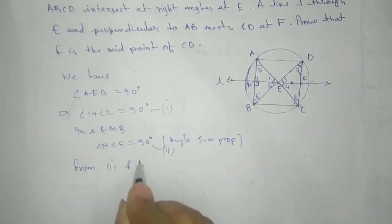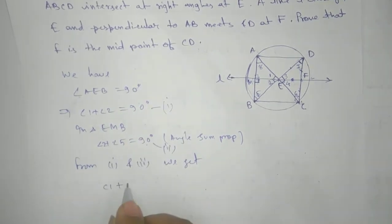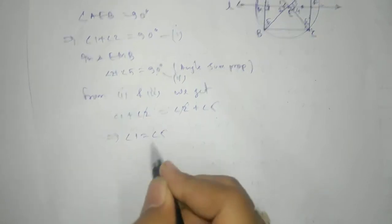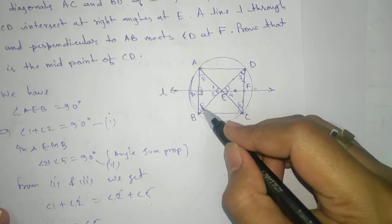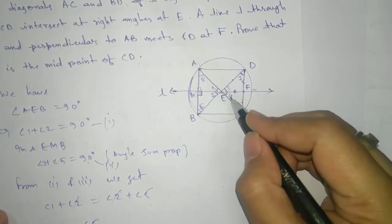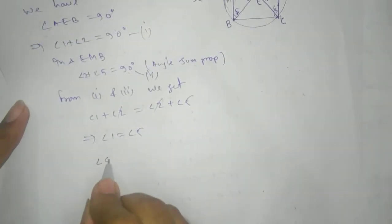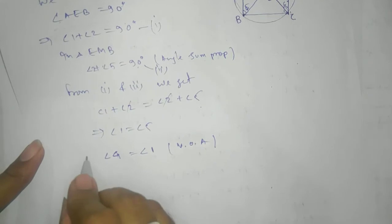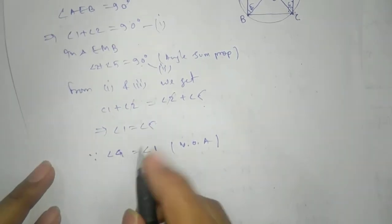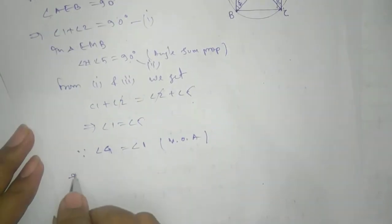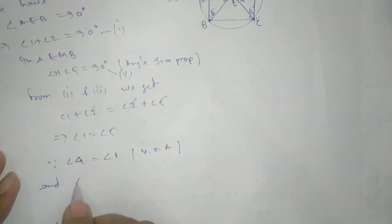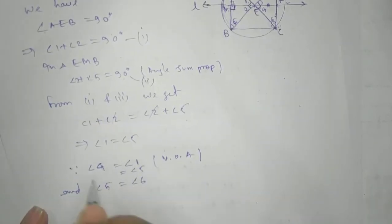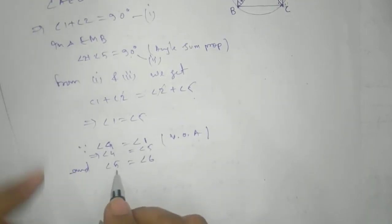From equations one and two, both equal 90, we can write: angle 1 plus angle 2 equals angle 2 plus angle 5. Cancelling angle 2 from both sides, we get angle 1 equals angle 5. Also, angle 4 equals angle 1 by vertically opposite angles. This implies angle 4 equals angle 5. And angle 5 equals angle 6 by angles in the same segment.